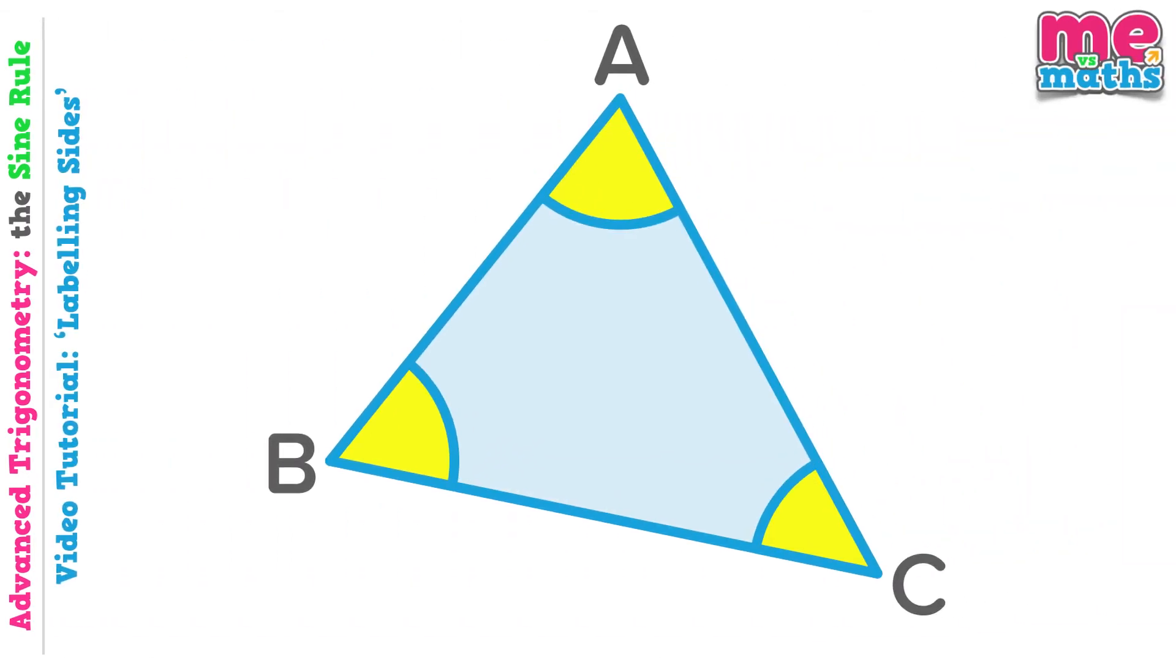So now we know how the angles are labelled, but how do we label the sides? We'll start by looking at angle A again. We call the side opposite angle A, side a. Now I know this is a bit confusing, to try and make things clearer see how we use the lowercase letter there for the side.